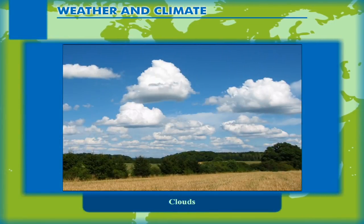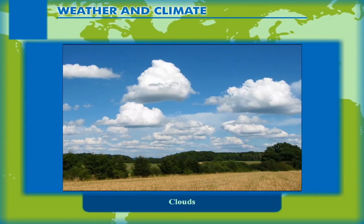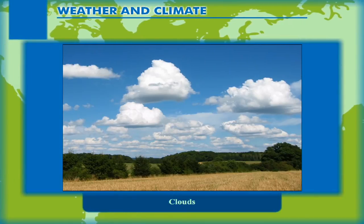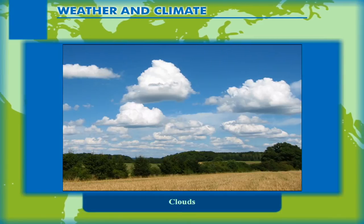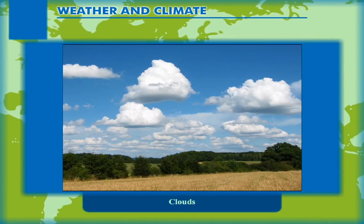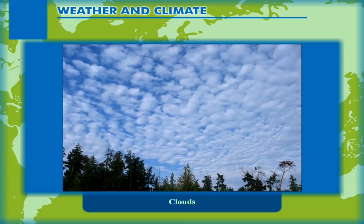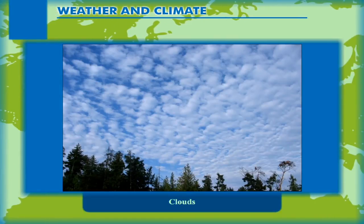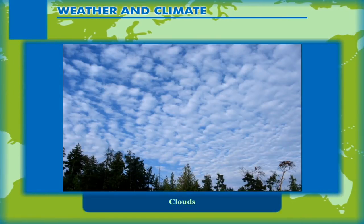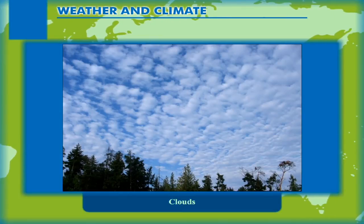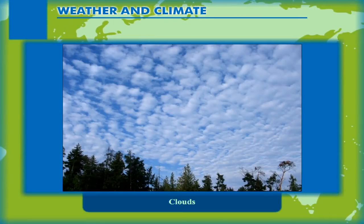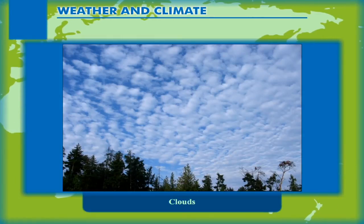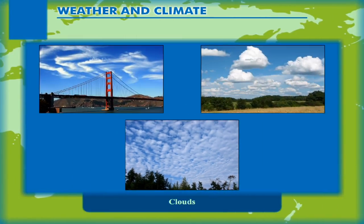Cumulus clouds have a flat base and appear as rising domes resembling a cauliflower. They are associated with fair weather. Stratus clouds are low-lying, grey and thick clouds found in the form of layers. They are generally representative of fair and clearing weather and occasional rain or snow.